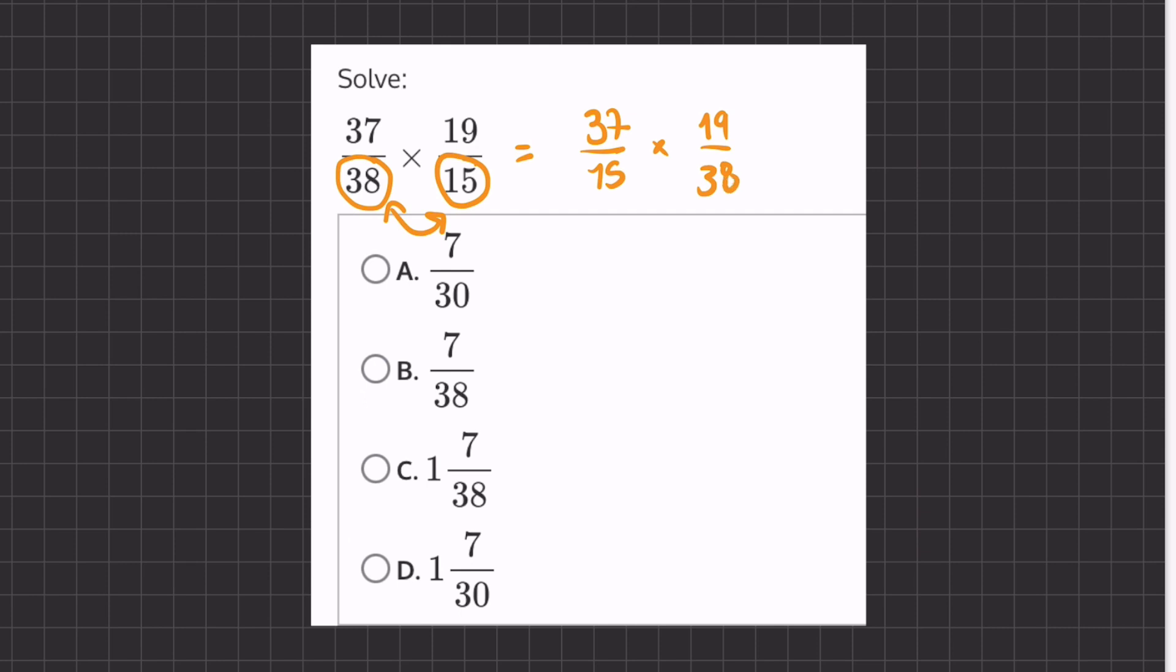This 19 over 38 can be divisible by 19, meaning that if we divide, we will get 1 half. Now, multiplying 37 over 15 times 1 half is a lot simpler than 19 over 38.